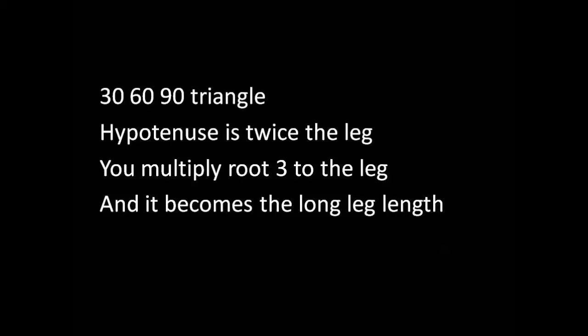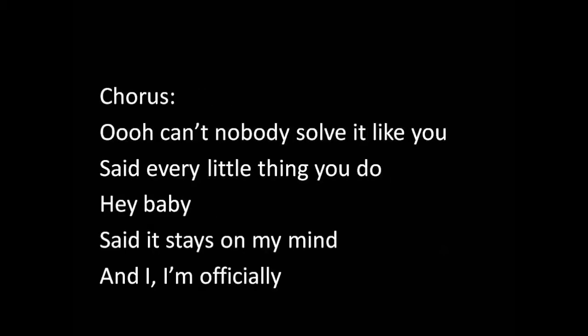30-60-90 Triangles: you multiply the short leg by root 3 to get the length of the long leg.